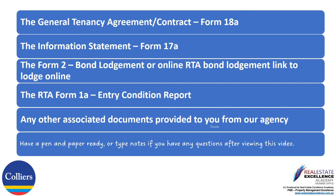You should have the following documents in front of you: the Form 18A, the General Tenancy Agreement Contract; the RTA Form 17A, the Information Statement. Bond information and RTA lodgement links to lodge your bond online direct to the RTA, or the Form 2 bond lodgement, will be provided by our agency. The RTA Form 1A Entry Condition Report will be provided to you on or before the day you take possession of the property — usually the day you pick up the keys. Any other associated documents from our agency will be included as well.